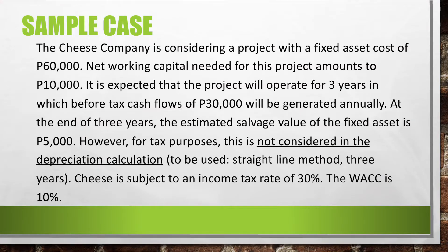Let us proceed immediately to the case. The Cheese Company is considering a project with a fixed asset cost of 60,000 pesos. Net working capital needed for this project amounts to 10,000 pesos. It is expected that the project will operate for 3 years, in which before-tax cash flows of 30,000 will be generated annually. At the end of the 3 years, the estimated salvage value of the fixed asset is 5,000. However, for tax purposes, this is not considered in the depreciation calculation.